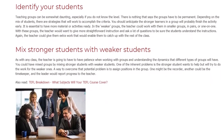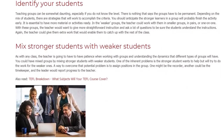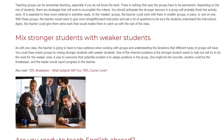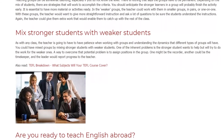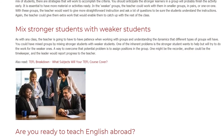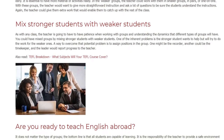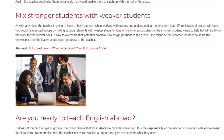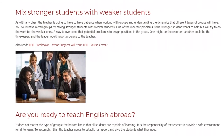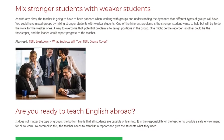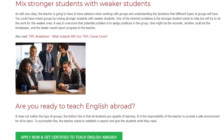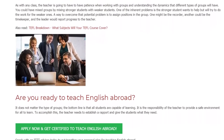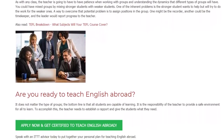Mix stronger students with weaker students. The teacher will need patience when working with groups and understanding the dynamics that different types of groups will have. You could form mixed groups by pairing stronger students with weaker ones. One inherent problem is that the stronger student may try to do the work for the weaker ones. A way to overcome this is to assign positions in the group: one might be the recorder, another the timekeeper, and the leader would report progress to the teacher.